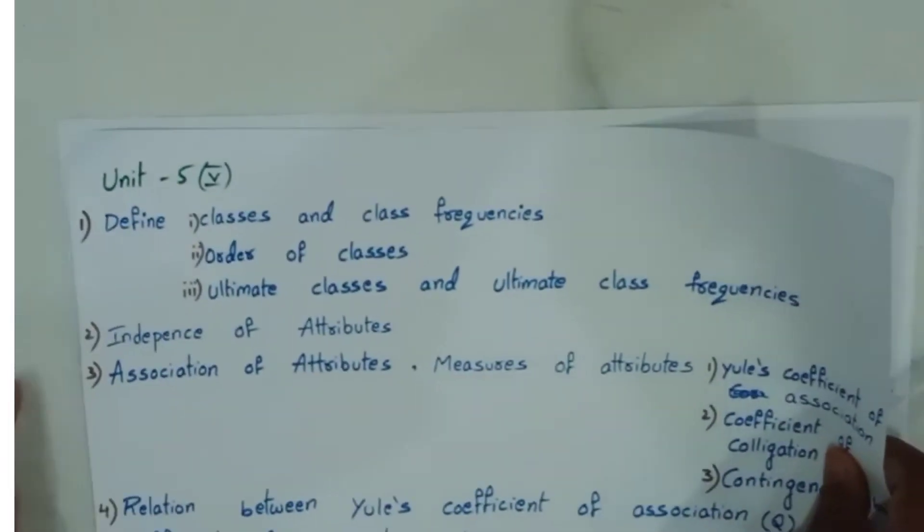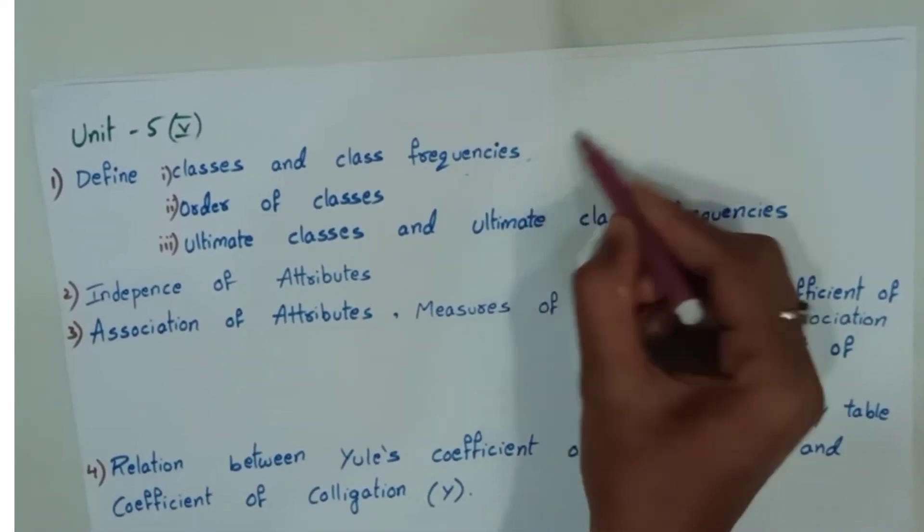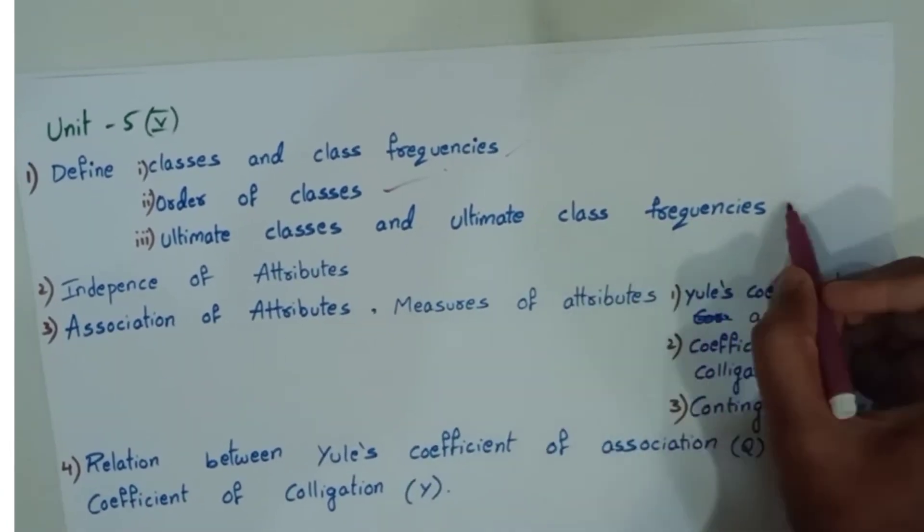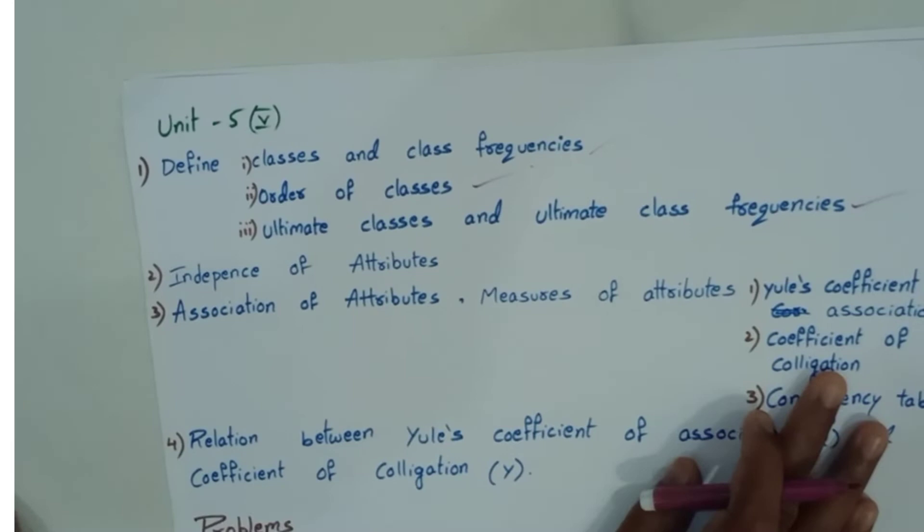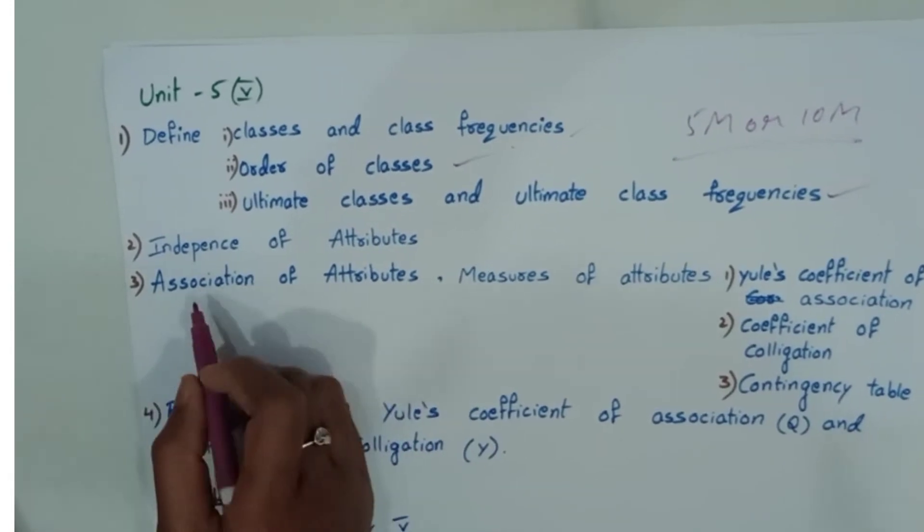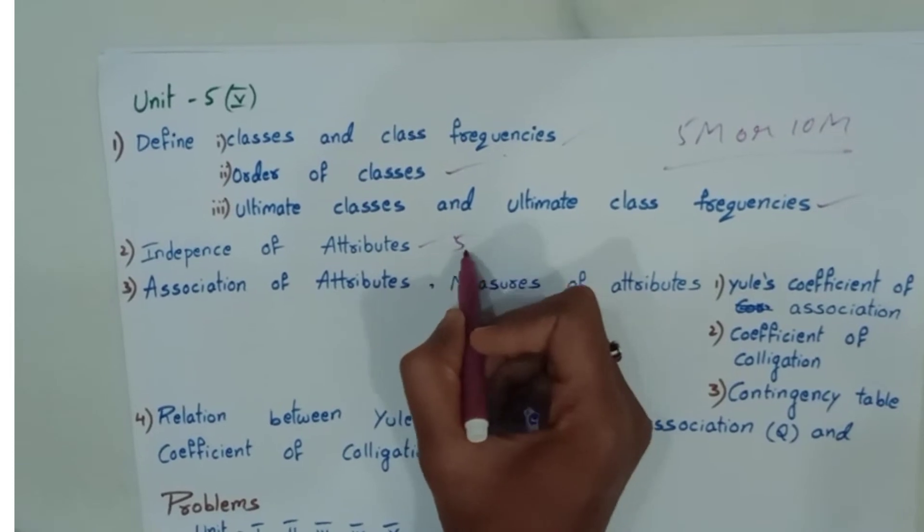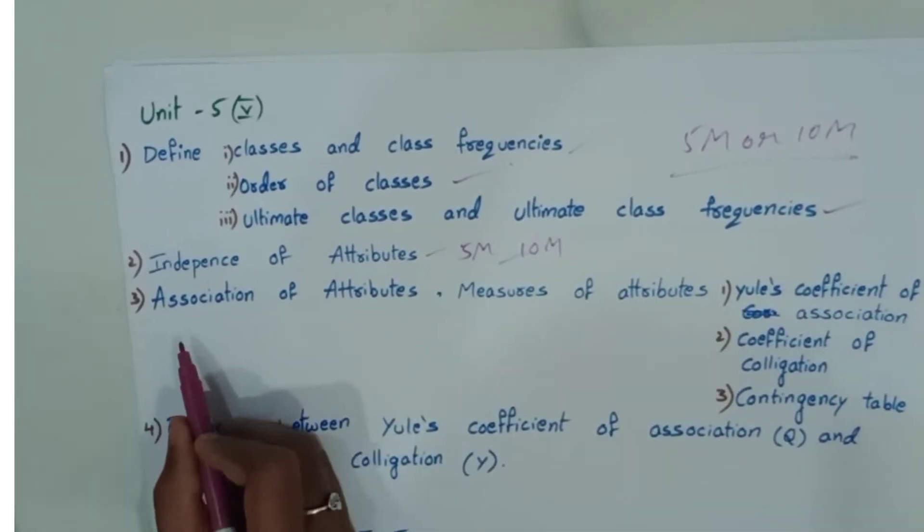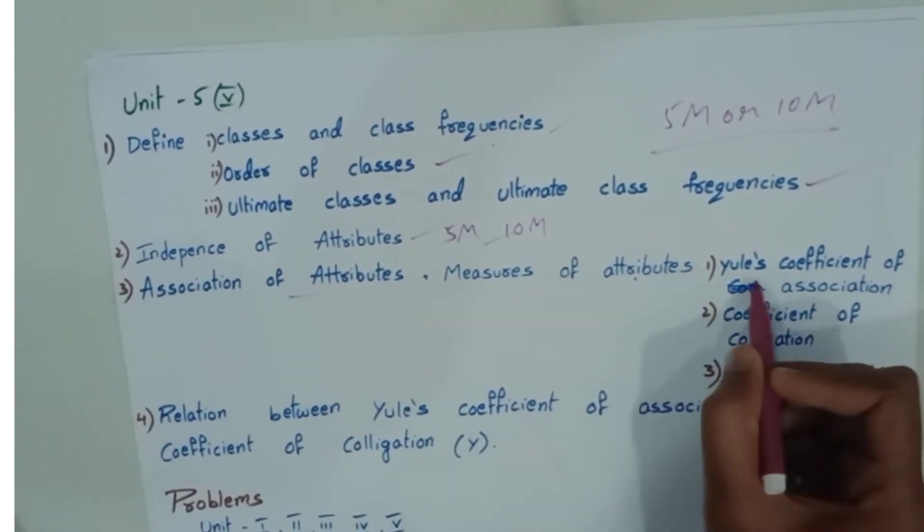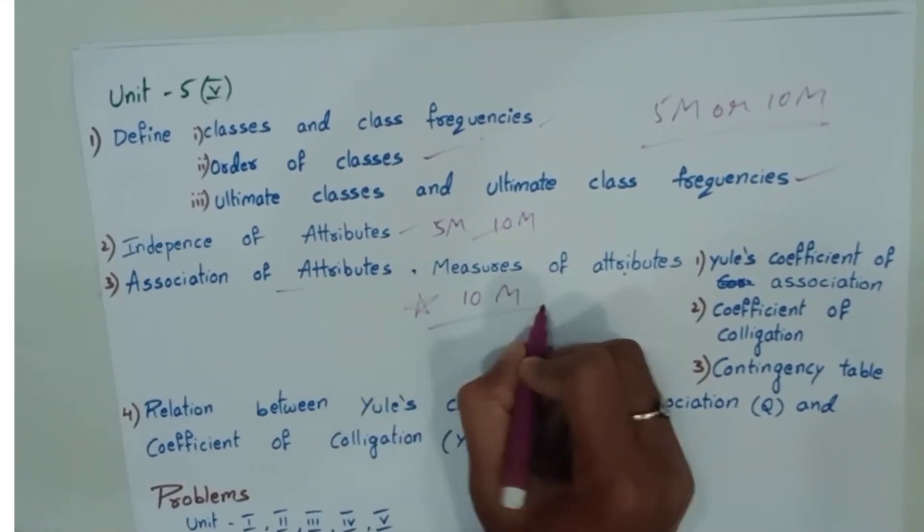Unit 5 Attributes. Classes and frequency definition, order of class definition, ultimate classes and ultimate class frequency definition. These definitions are compulsory to prepare, 5 or 10 marks. Next Independence of attributes. Definition prepare well, 5 or 10 marks. Next Association of attributes and measures of attributes. Measures of attributes three types. Prepare well, confirm 10 marks question from these.